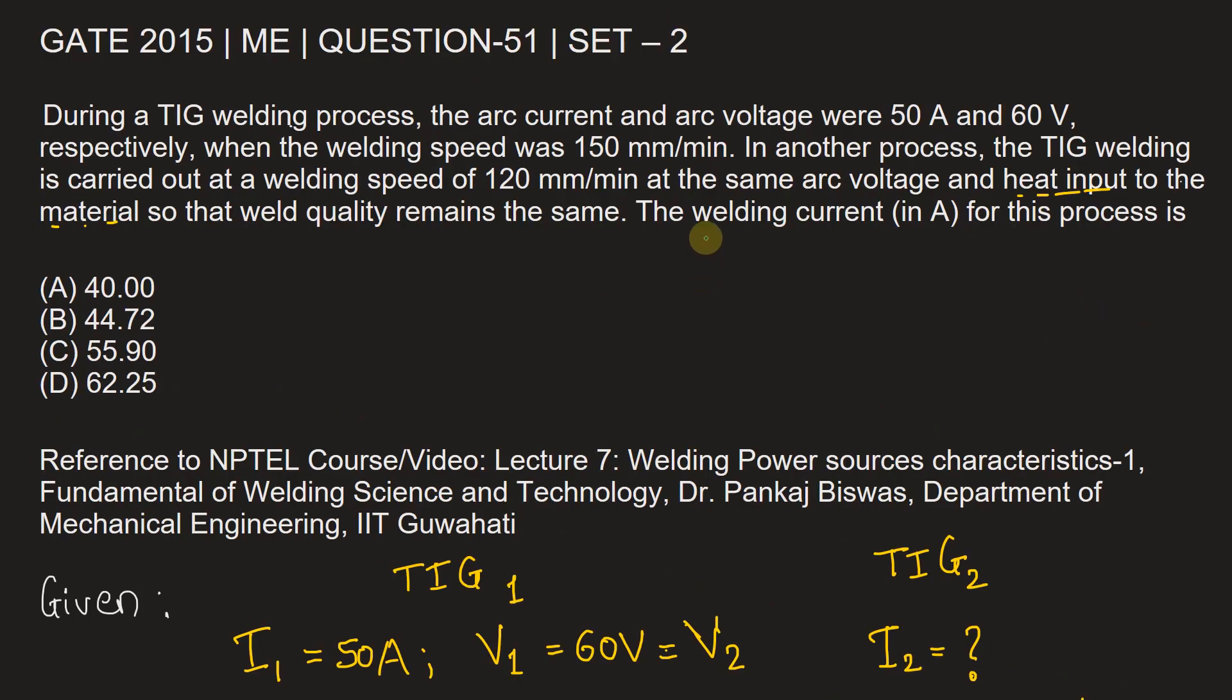Let's fill in the answer. The welding current for this process is 40 ampere, option A.